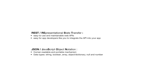JSON has limitations on its supported data types. The supported types are: String, Boolean, Array, Dictionary, Null, and Numbers. That is a short description of JSON.